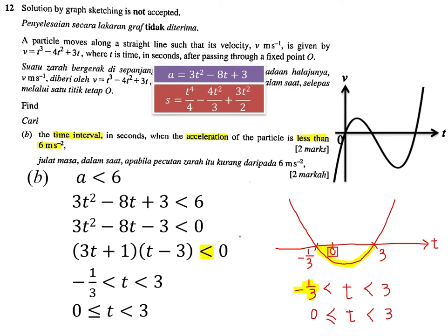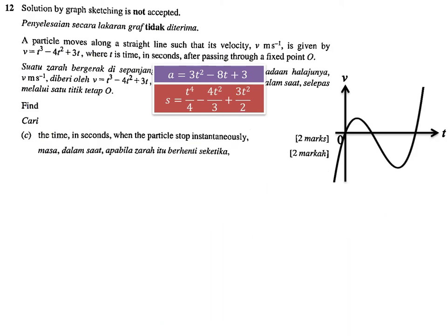One mark is given when you factorize correctly, and one mark for the final answer: 0 ≤ t < 3.